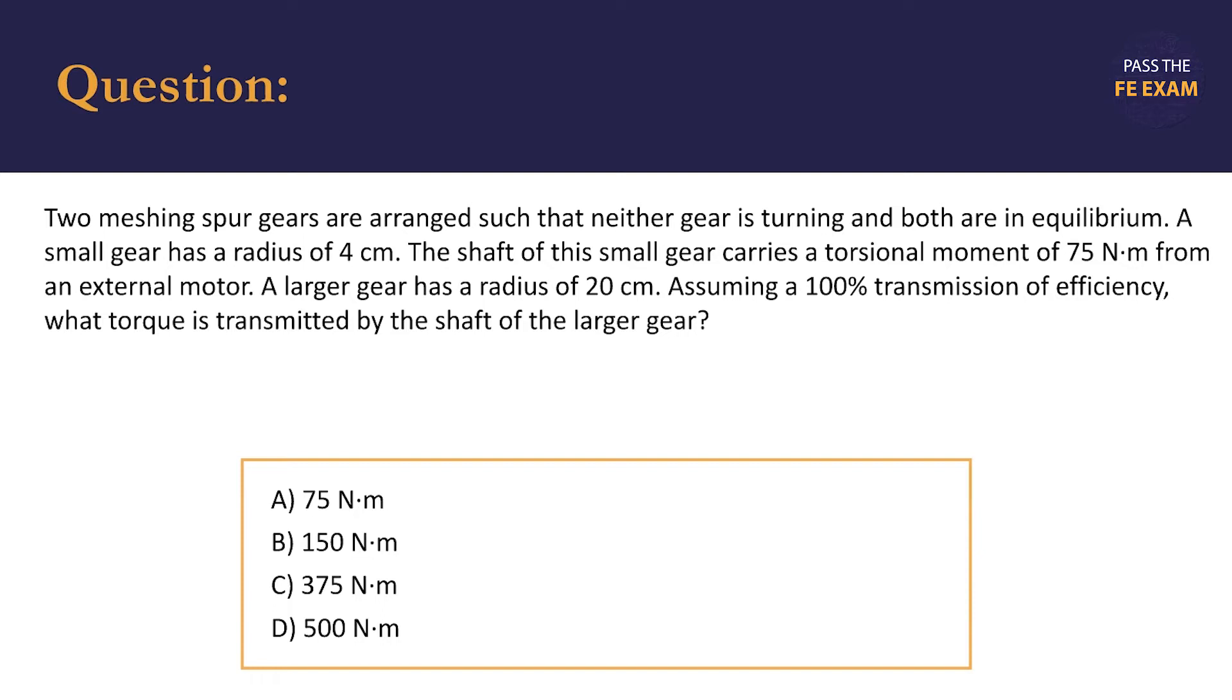In this force transfer problem, we have two meshing spur gears that are arranged such that neither gear is turning and both are in equilibrium. The smaller gear has a radius of 4 cm and the shaft of this small gear carries a torsional moment of 75 Nm from an external motor.